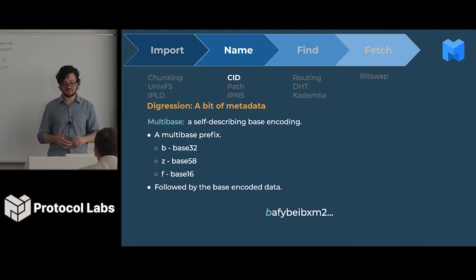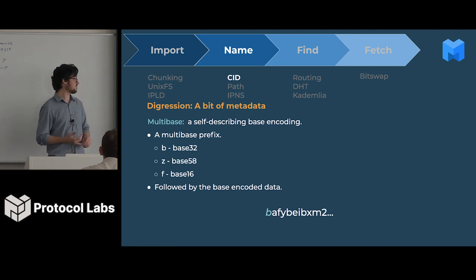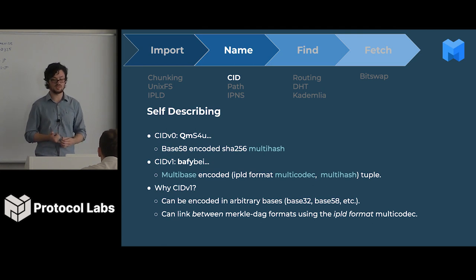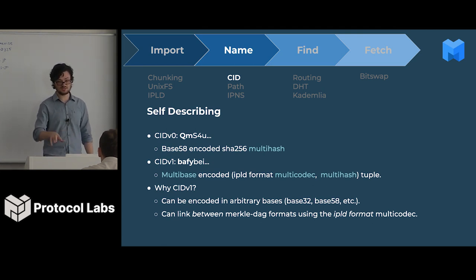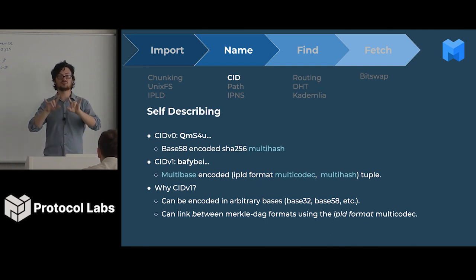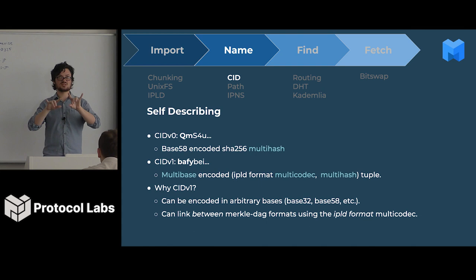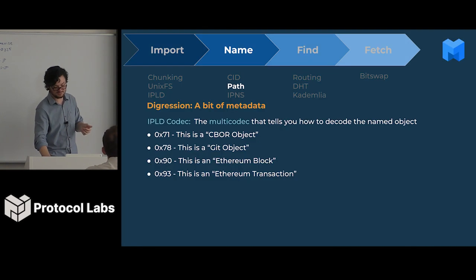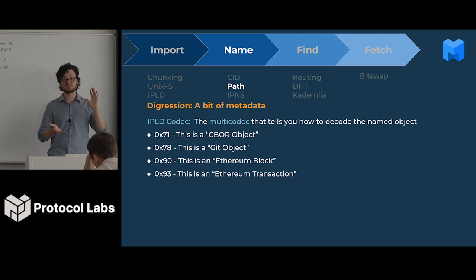Finally, IPLD. In CIDv1, it's a multibase-encoded IPLD format plus multihash tuple. The IPLD format part tells us how we encoded the data we point to. The multihash tells us which data we're talking about — it's a hash of the content. We have codecs for Git objects, Ethereum blocks, Ethereum transactions, IPLD UnixFS files, and all these different formats.